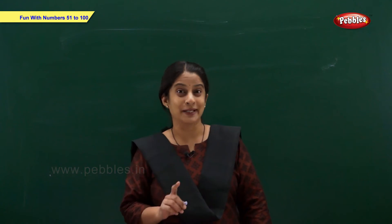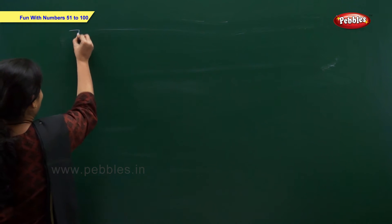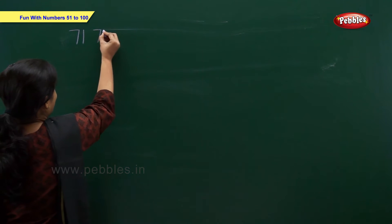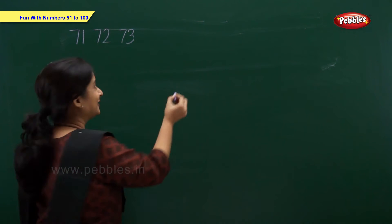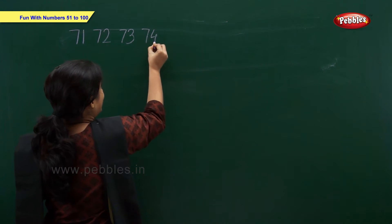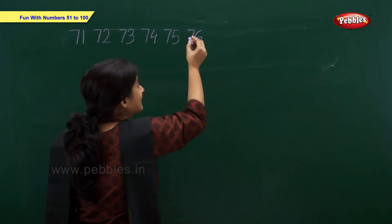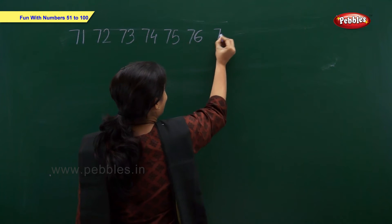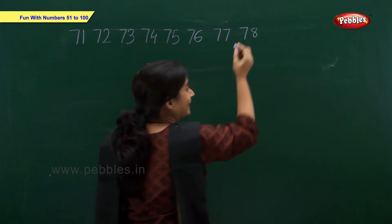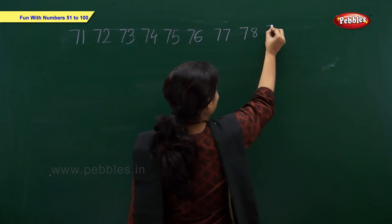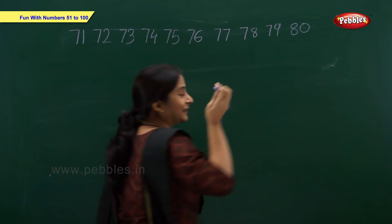Let us write numbers from 71 to 90. 71, 72, 73, 74, 75, 76, 77, 78.